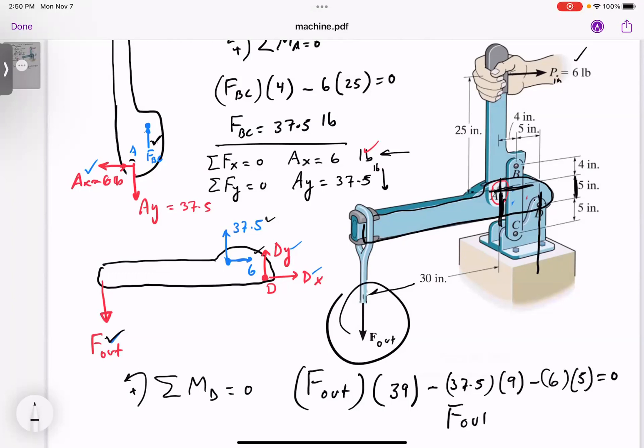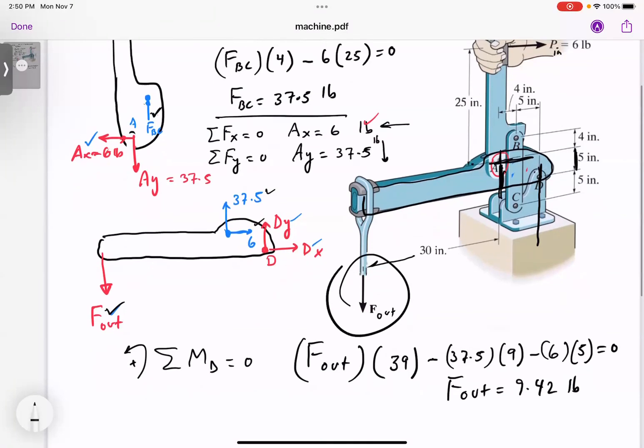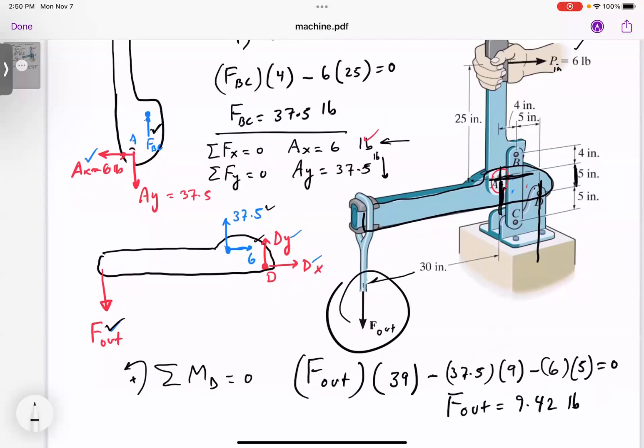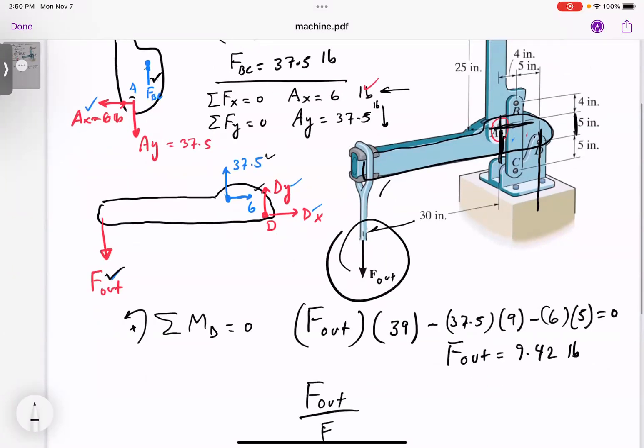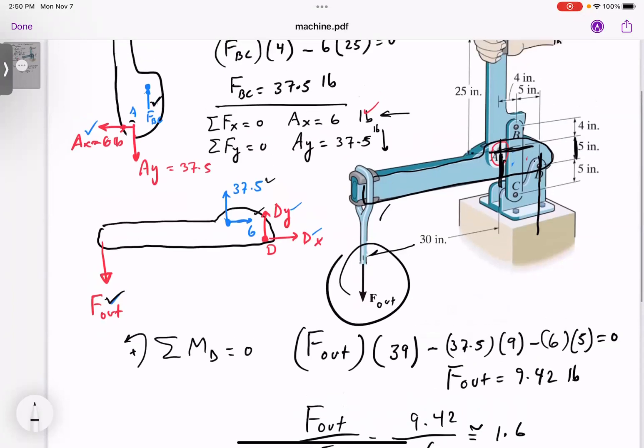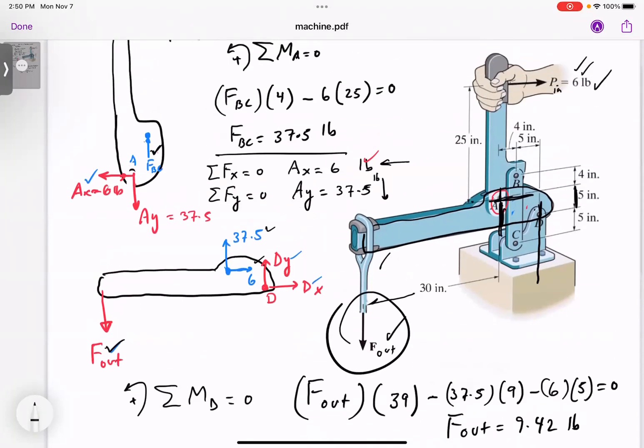If you find F out, that's about 9.42 pounds. This machine is not that efficient. You want a machine where if you apply one pound you get five or six pounds. Look at the ratio of output force to input force, 9.42 over six pounds, that's about 1.6. You're only increasing your input force by 60 percent.